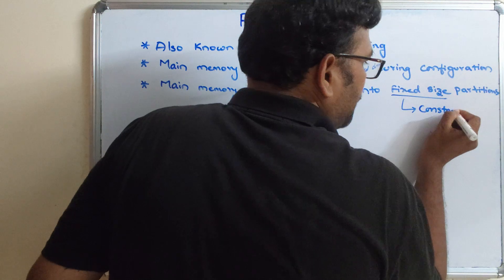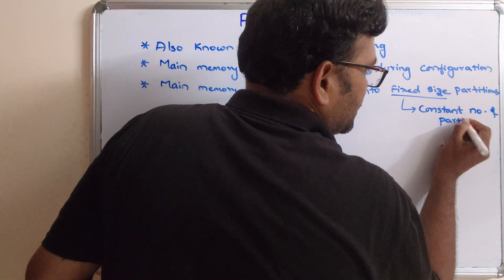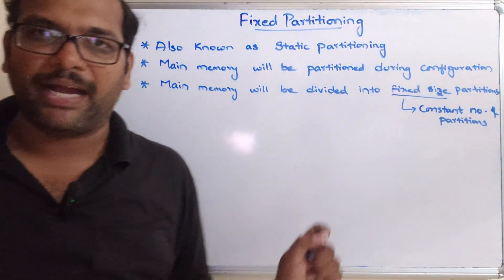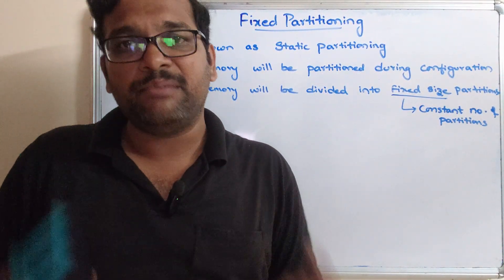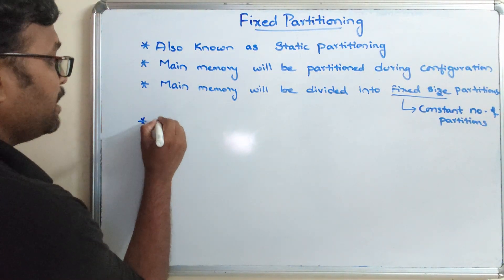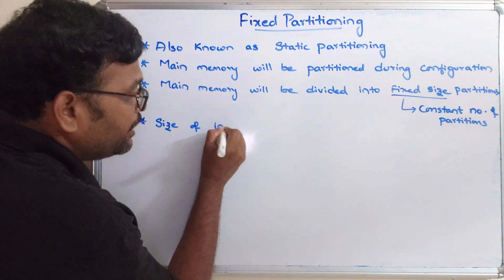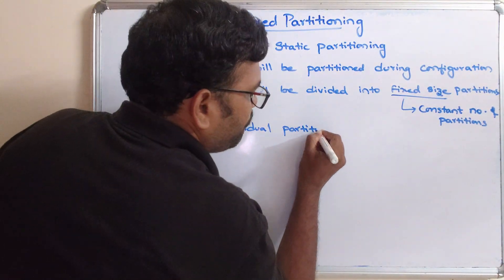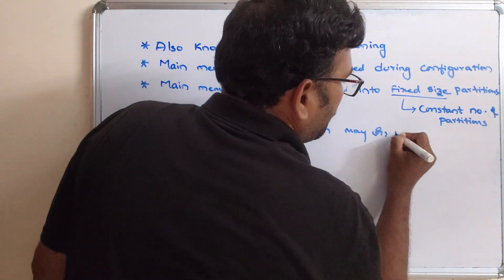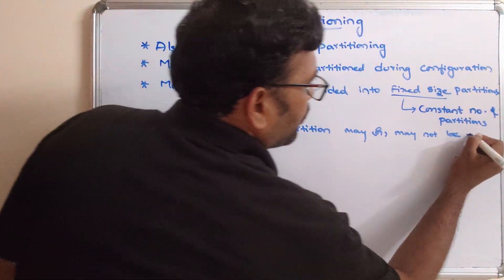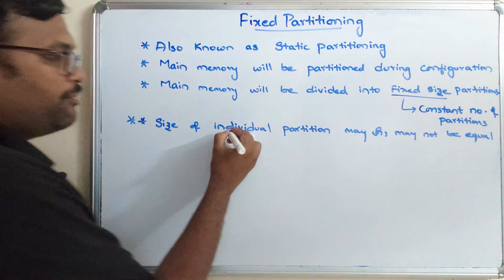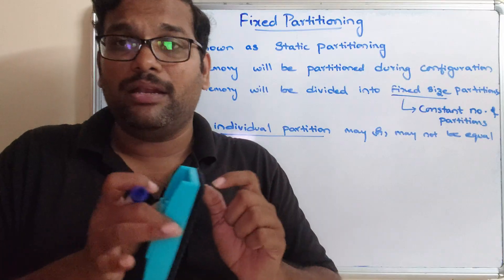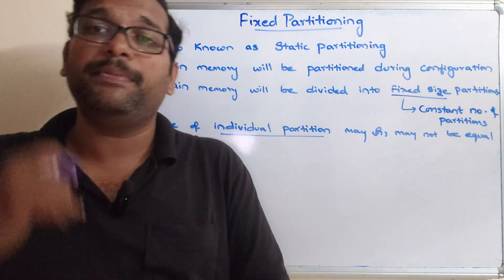Fixed size means a constant number of partitions. There can be a little confusion regarding this fixed size. The fixed size means a constant number of partitions - that doesn't mean that each and every partition should be of the same size. The size of individual partitions may or may not be equal. This is the most important point. The complete memory will be divided into a fixed number of partitions, and those partitions cannot be updated further.